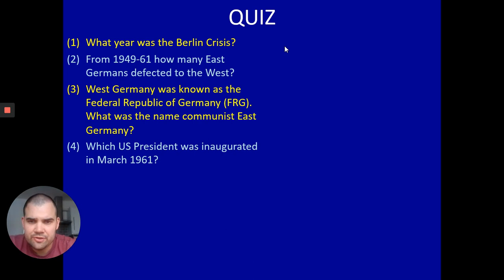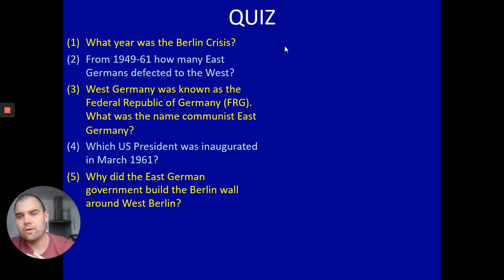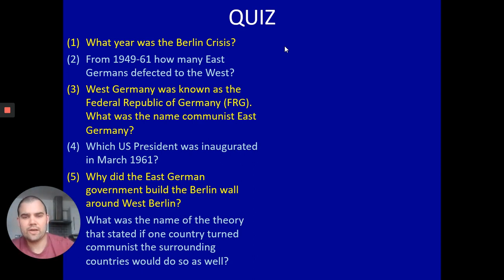Number four: which US president was inaugurated — came to office — in March 1961? Number five: why did the East German government build the Berlin Wall around West Berlin? Number six: what was the name of the theory that stated if one country turned communist, the surrounding countries would do so as well? We came across that idea when we were looking at the Vietnam War.